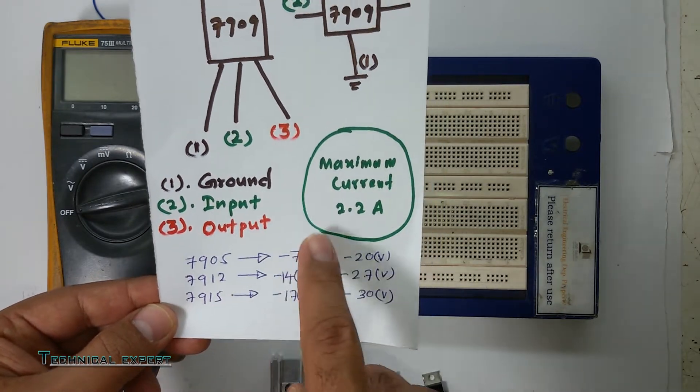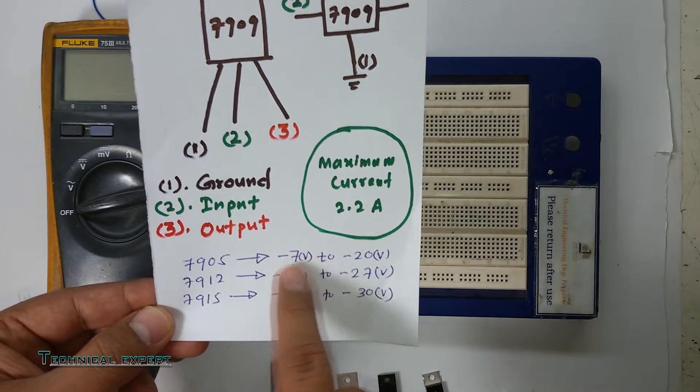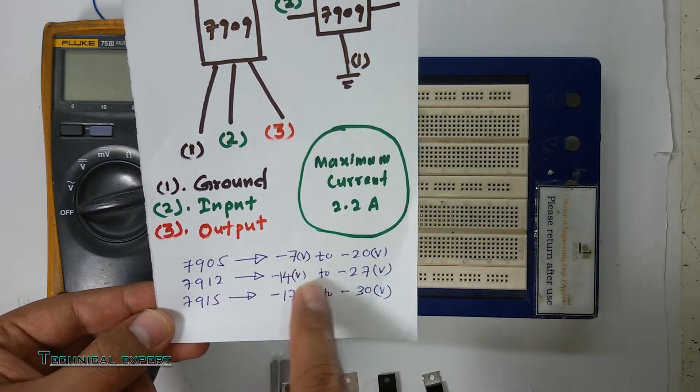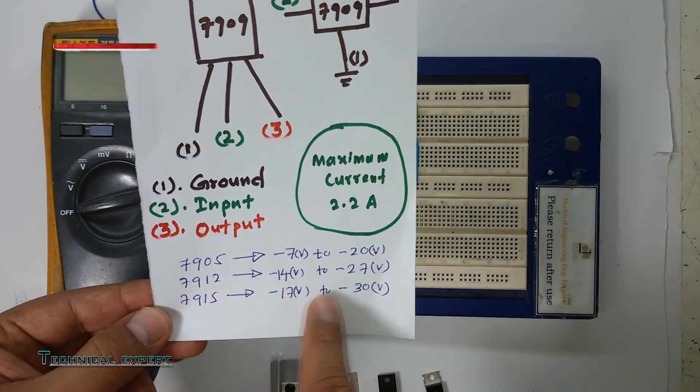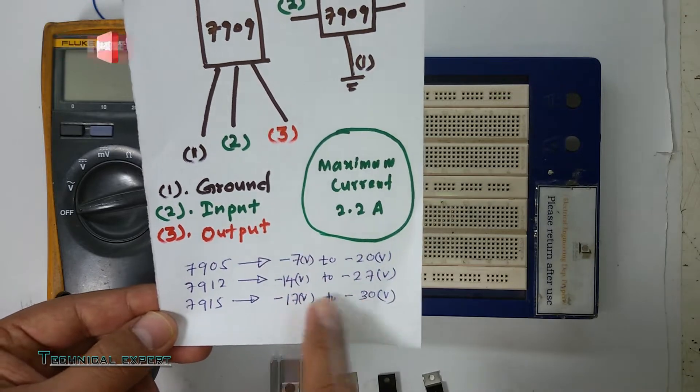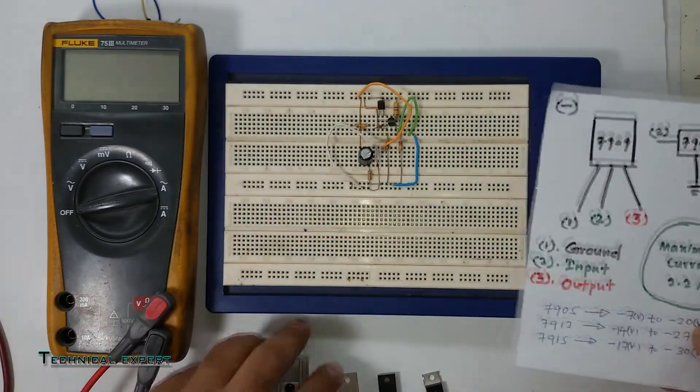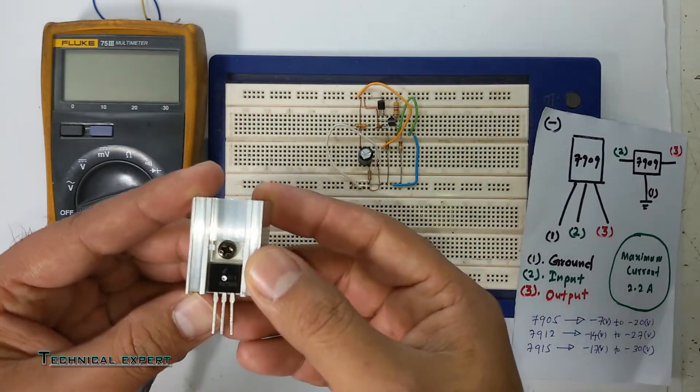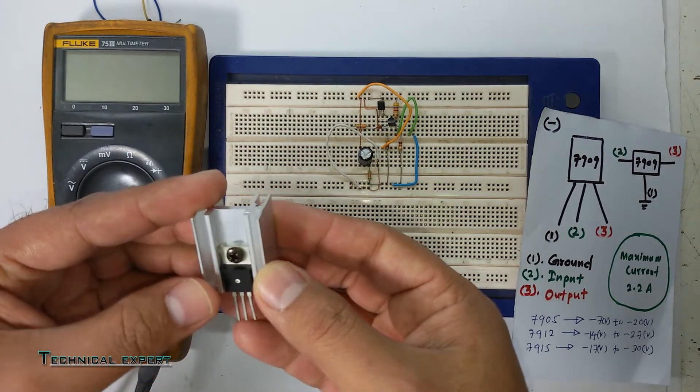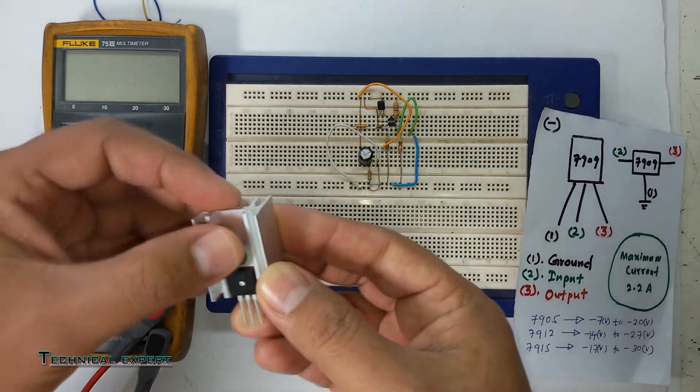This is the supply voltage range you can give. Today we'll use the 7905 with a practical session, putting it here on our breadboard.